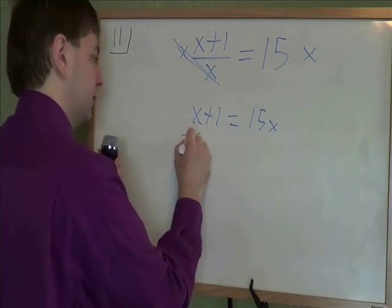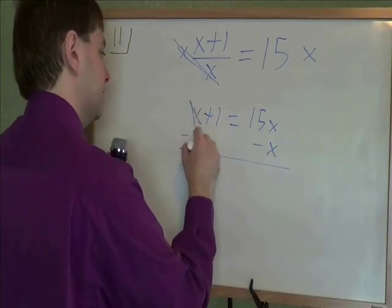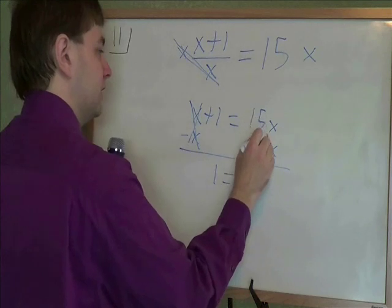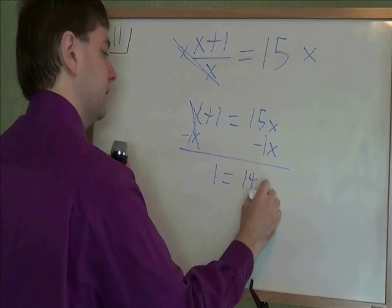I'm going to get rid of the x's on the left side and put them on the right side. x minus x cancels out, still have that 1, 15x's minus x. Well that's like subtracting 1x so that leaves you with 14x's.